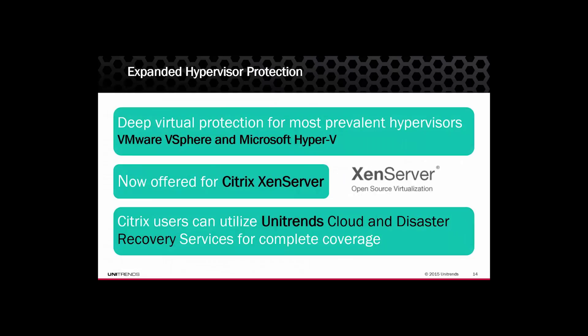Our third bucket of enhancements is especially important for customers using Unitrends Virtual Backup or the legacy PHD Virtual products running on Citrix XenServer. With 9.0, Unitrends Enterprise Backup now supports deep virtual protection for VMware, Hyper-V, and Citrix XenServer. Citrix XenServer support is available for UEB only at this time. Citrix users can now benefit from complete deep virtual protection in UEB, as well as all other features in the product — including Unitrends Cloud and DRaaS services.